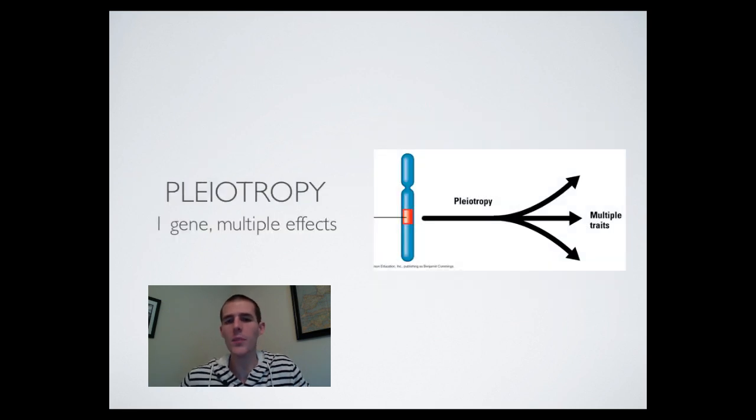Then we've got pleiotropy. This is summed up very nicely by this little diagram I've got right here. You have one gene that has multiple effects on the phenotype. A good example of this would be cystic fibrosis. You've got one gene broken that causes cystic fibrosis, but there are many effects in the body of the disease that is cystic fibrosis. You've got problems with muscles. You've got mucus production issues. You've got problems with your lungs. So that one little gene is having multiple effects inside the body.